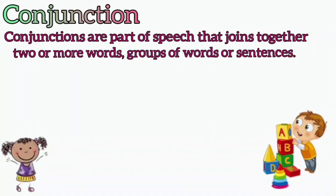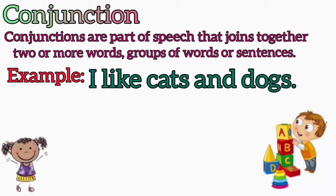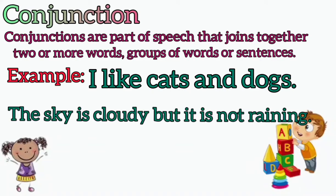The next part of speech are conjunctions. Conjunctions are words used to combine two or more words, groups of words, or sentences to form bigger, meaningful sentences. For example, 'I like cats and dogs.' The conjunction is 'and' because it combines cats and dogs together. In the next example, 'The sky is cloudy but it is not raining.' The conjunction is 'but' because it combines two sentences — 'The sky is cloudy' and 'It is not raining' — into one meaningful sentence.